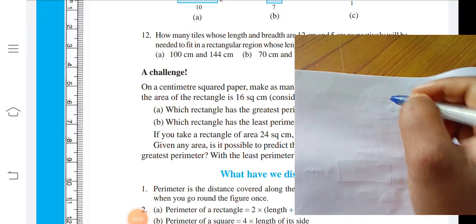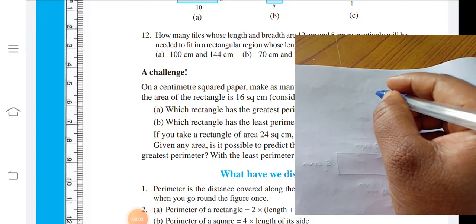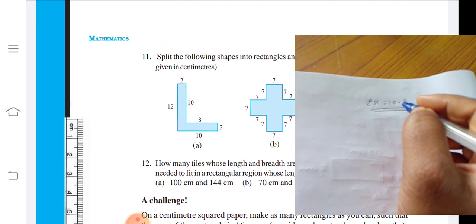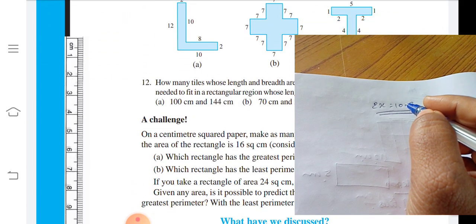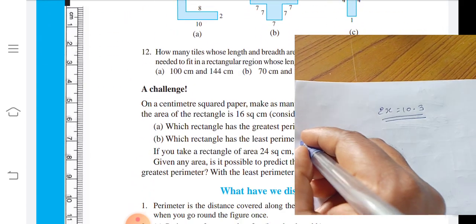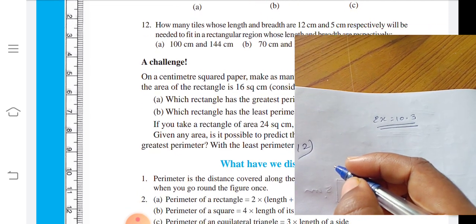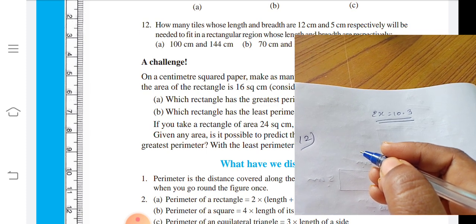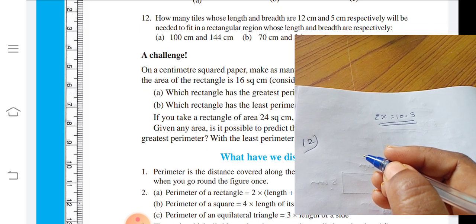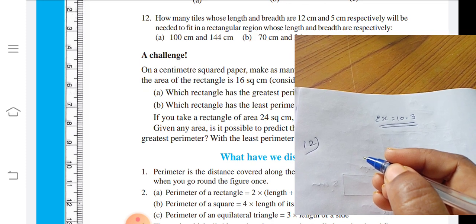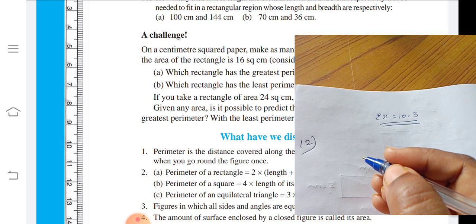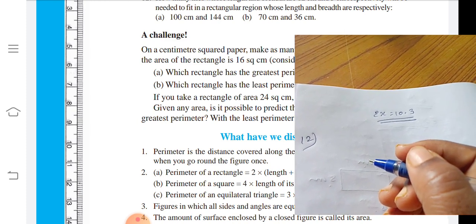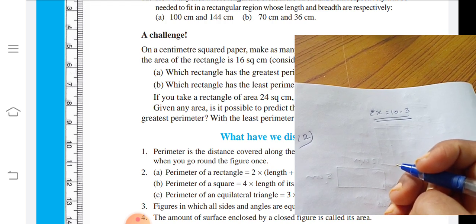Hello children, welcome to Success Standard Maths class, exercise 10.3 from mensuration. Today we are going to solve the 12th problem. How many tiles whose length and breadth are 12 cm and 5 cm respectively will need to fit in the rectangular region whose length and breadth are respectively: A. 100 cm and 144 cm, B. 70 cm and 36 cm.